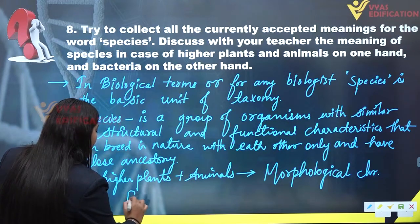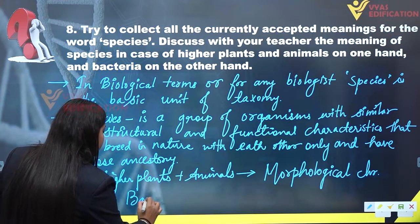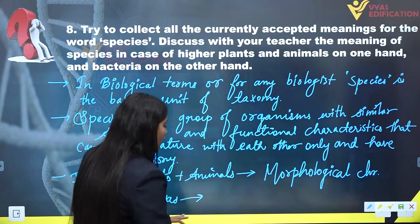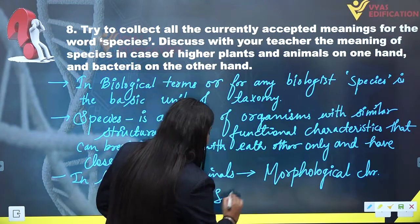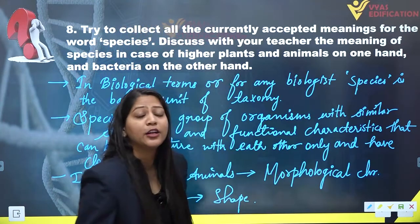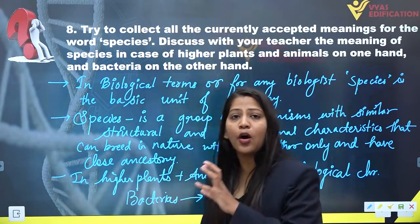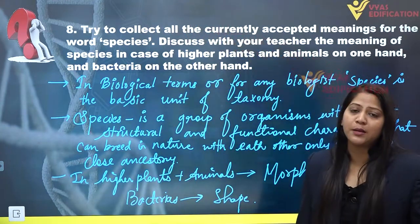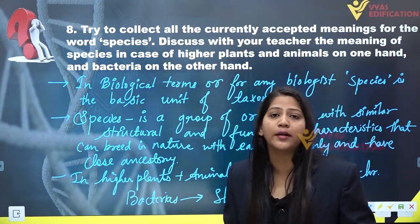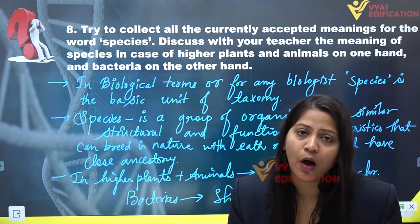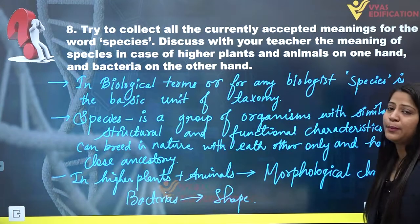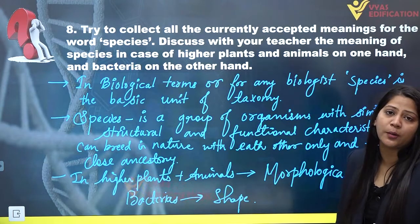And in the case of bacteria, the species are distinguished on the basis of shape. Hence, we can conclude that in the case of higher plants, animals, and bacteria, species are not the same at all. This is the complete answer of question number 8.